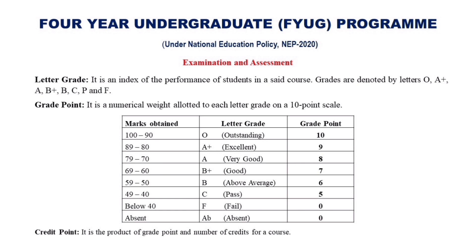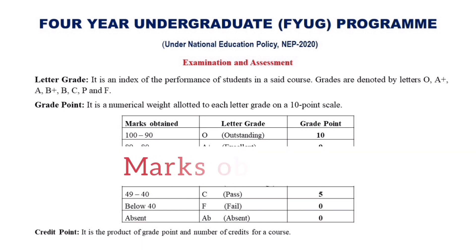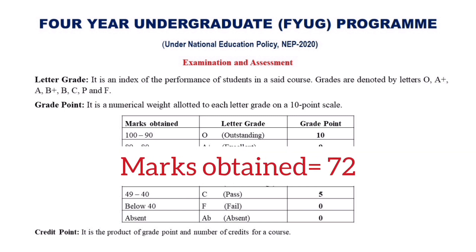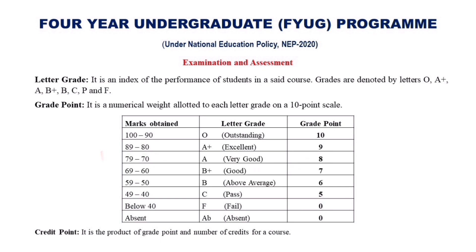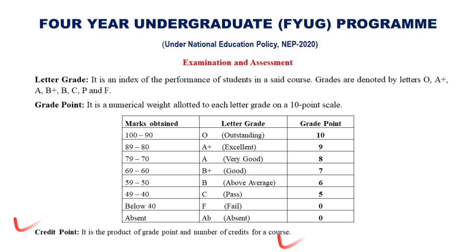For example, if a student secures 72 marks in a paper, this mark falls in the range 70 to 79, so he or she will get a letter grade of A and the grade point will be 8. The grade point of a student in a paper will then be converted into credit points.